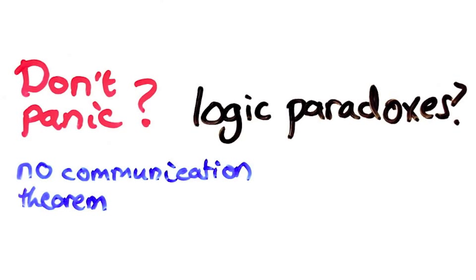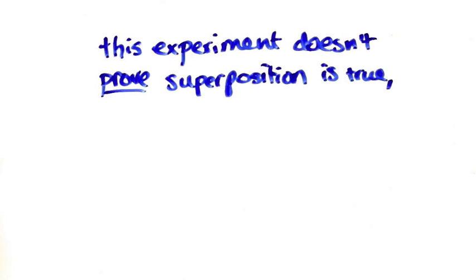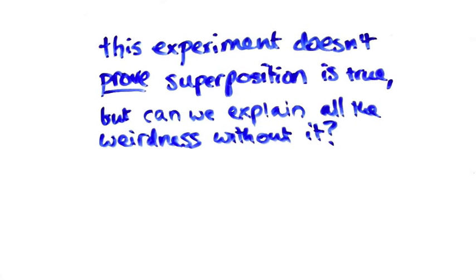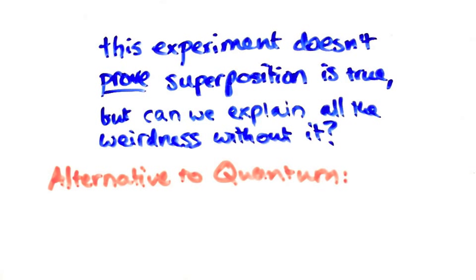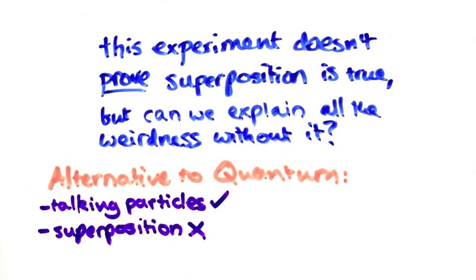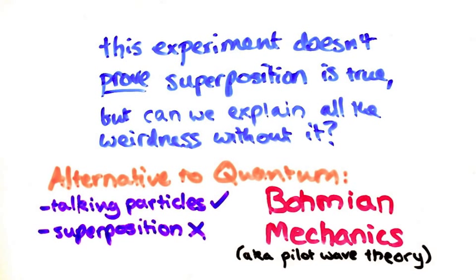Another question is that, sure, this experiment doesn't prove that superposition is true, but is it really possible to explain all the weird experiments we've been talking about without it? Turns out it might be. There is at least one very promising alternative to quantum mechanics that does have talking particles, so it's not ruled out, but doesn't have superposition. It's called Bohmian mechanics and I might make a video about it because it's pretty amazing.